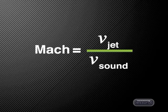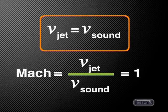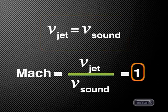People in the aircraft industry describe the speed of an aircraft using a term called the Mach number. This number is the ratio of the speed of the jet to the speed of sound. For the motion we have just been looking at, the speed of the jet is equal to the speed of sound. So the Mach number for a jet that is traveling at the speed of sound is Mach 1.